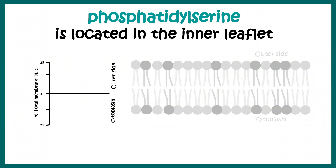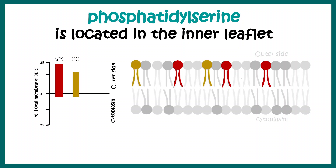This principle is based on the heterogeneity in membrane lipid distribution. Several membrane lipids like sphingomyelin and phosphatidylcholine are generally distributed in the outer leaflet, whereas phosphatidylserine is generally distributed in the inner side of the leaflet. In healthy cells, it remains in the inner side and never goes to the outer side.